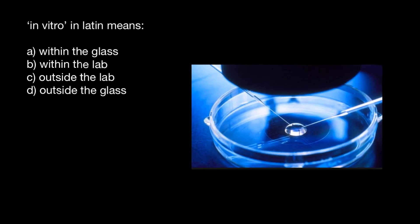In vitro fertilization means that we take an egg cell and fertilize it with a sperm cell outside the normal surroundings — usually in a petri dish. We can also say that such experiments are conducted in test tubes, so outside the normal biological surroundings. The opposite would be 'in vivo'.